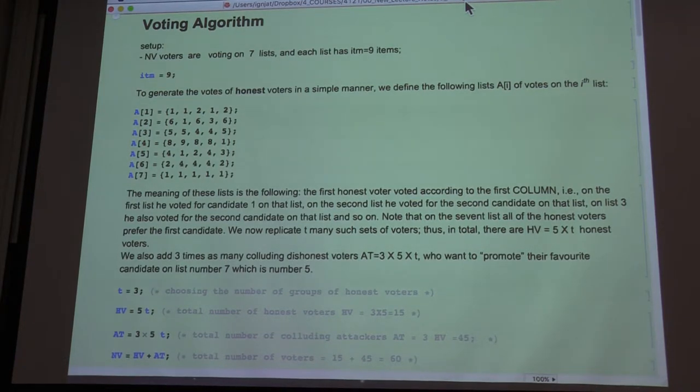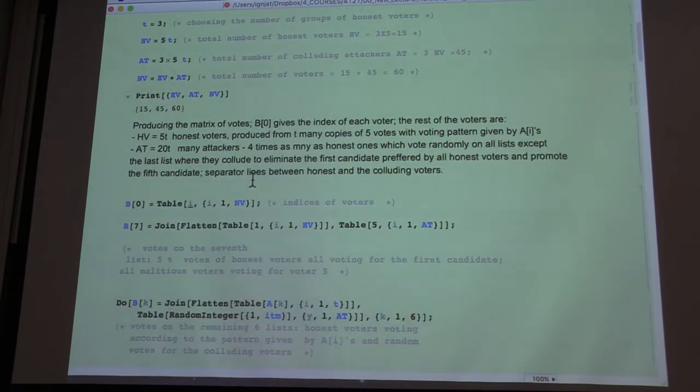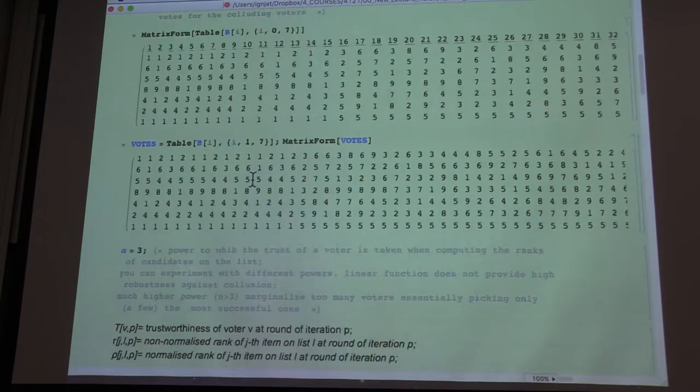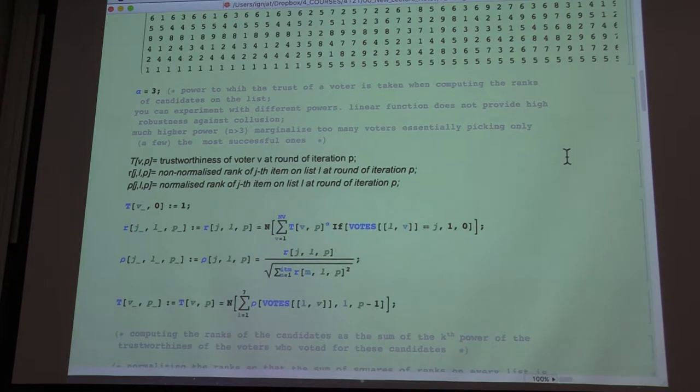So to force Mathematica to simplify things down to numbers where possible, you use this command N of something which tells Mathematica that it should evaluate the functions rather than keep them in a symbolic form.